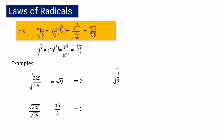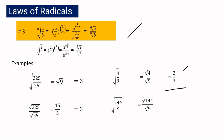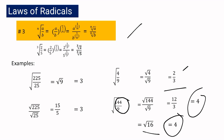If we have square root of 4 over 9, since 4 is not divisible by 9, we use the third law of radicals: square root of 4 over 9 equals square root of 4 over square root of 9, which simplifies to 2 over 3. Similarly, square root of 144 over 9 equals square root of 144 divided by square root of 9, which is 12 over 3, equal to 4. Alternatively, 144 divided by 9 equals 16, and the square root of 16 is also 4. That is our third law of radicals.